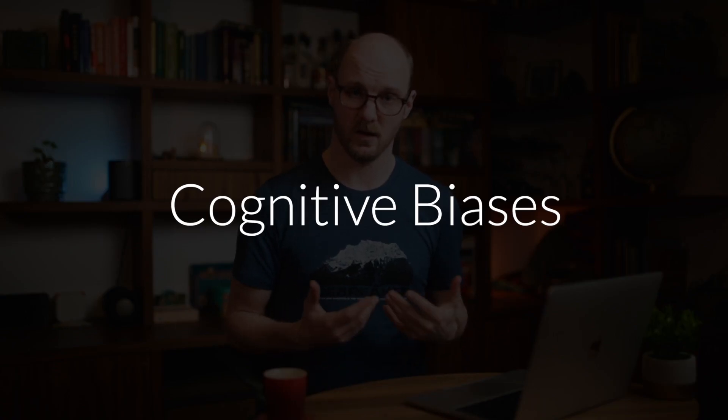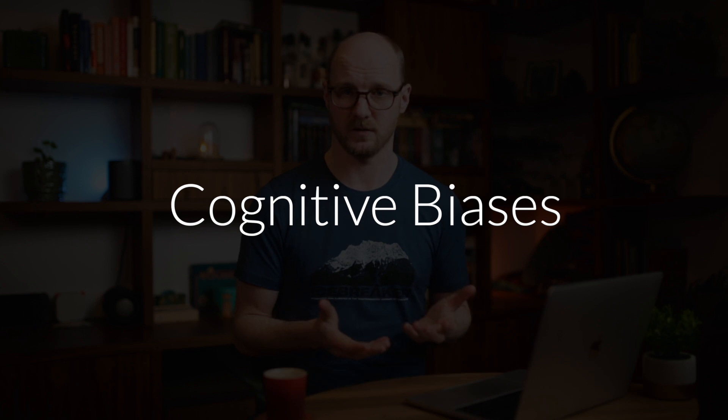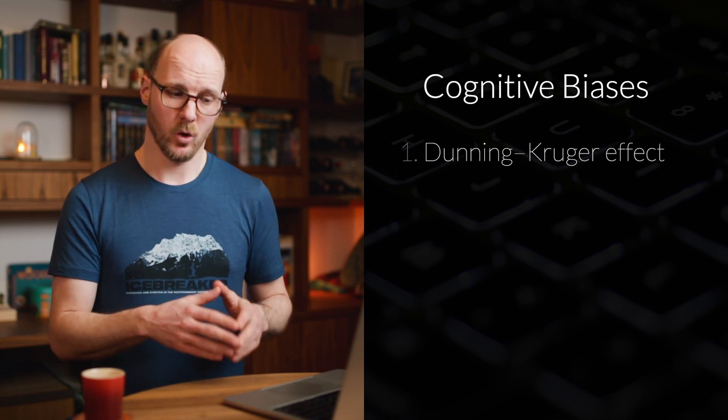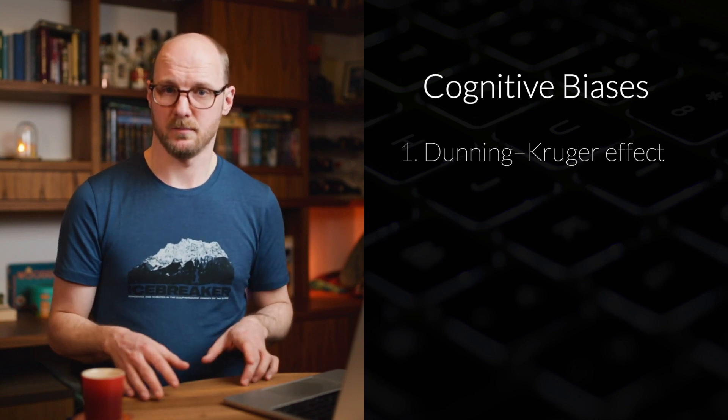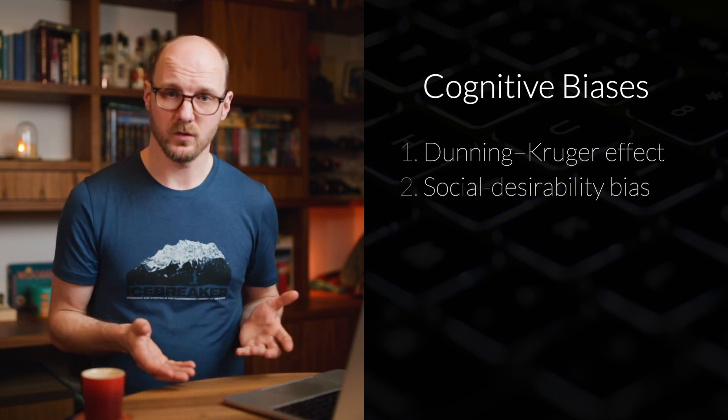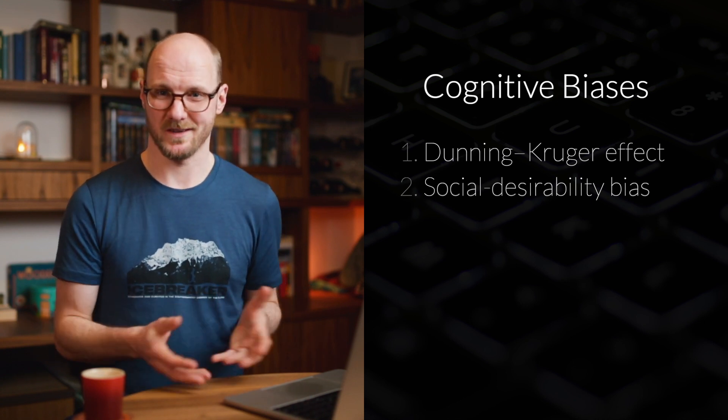There are 3 cognitive biases I could find which are relevant to software estimations, but there's probably more. Number 1 is that we tend to overestimate our own ability, our own competence at a certain task. This is called the Dunning-Kruger effect, and it yields lower numbers when estimating time. The second one is that we tend to give desirable answers — we tell people what they want to hear. This is called the social desirability bias.